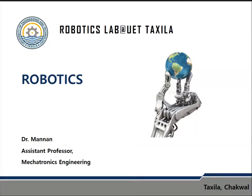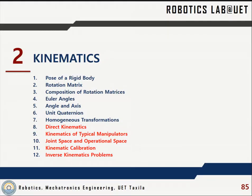Welcome to today's robotics lecture. This is chapter two from the book by Siciliano. I'll be covering closed chain kinematics and typical manipulator kinematics, then discussing joint space and operational space. I'm leaving kinematic calibration and reverse kinematics problems to the students — if you have any problems with those two articles, please write to me.